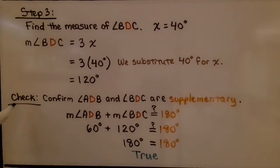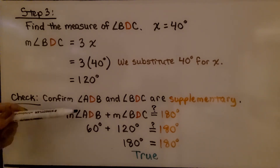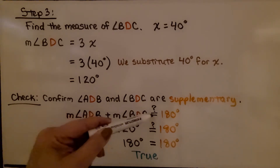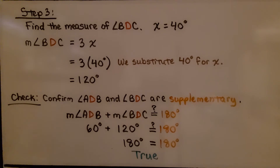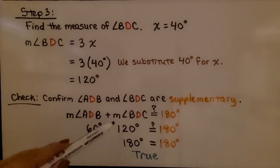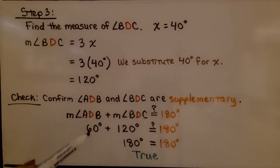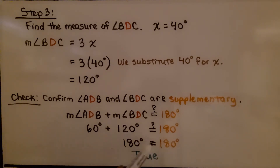We check by confirming that angle ADB and angle BDC are supplementary. We write: measure of angle ADB plus measure of angle BDC — is that equal to 180 degrees? We have 60 degrees plus 120 degrees. Since 60 degrees plus 120 degrees equals 180 degrees, it's true.